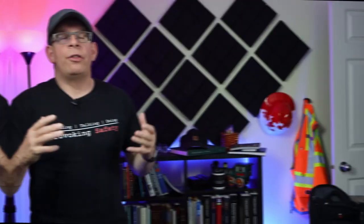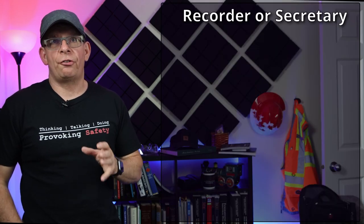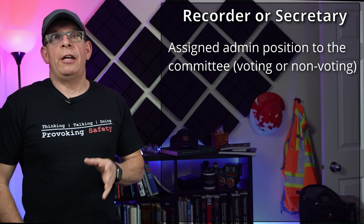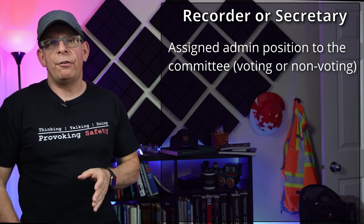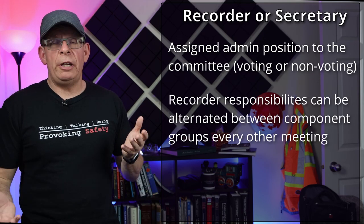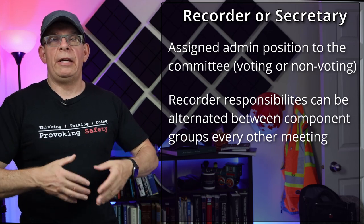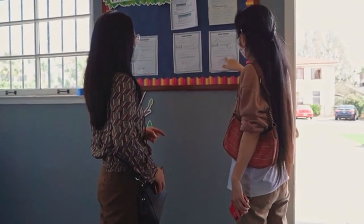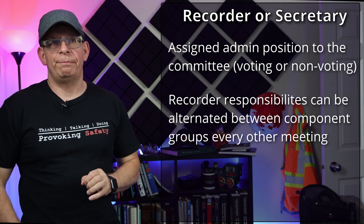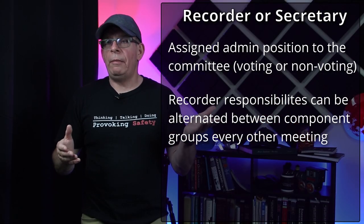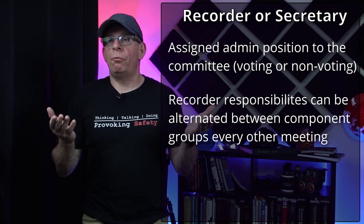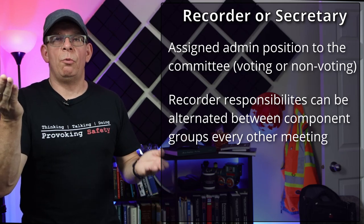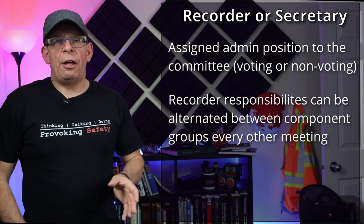The next position is the recorder or secretary. Depending on your organization's structure, this role can be filled a few different ways. The organization can provide admin support, and that worker may or may not be a voting member. Another option is for members to alternate — every meeting or every second meeting — taking minutes, typing, editing, and posting the final minutes wherever required. Some jurisdictions require physical posting of hard copies in common areas such as lunchrooms, so check your OHS authority for details. In the alternating model, when a manager is co-chairing the meeting, someone from the worker group records the minutes, and vice versa.